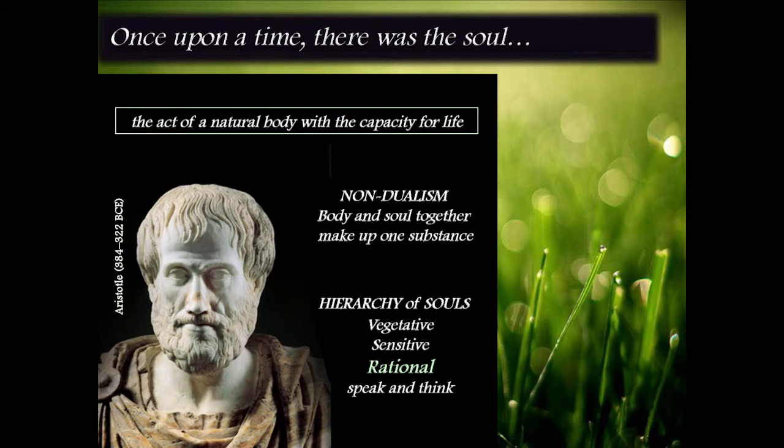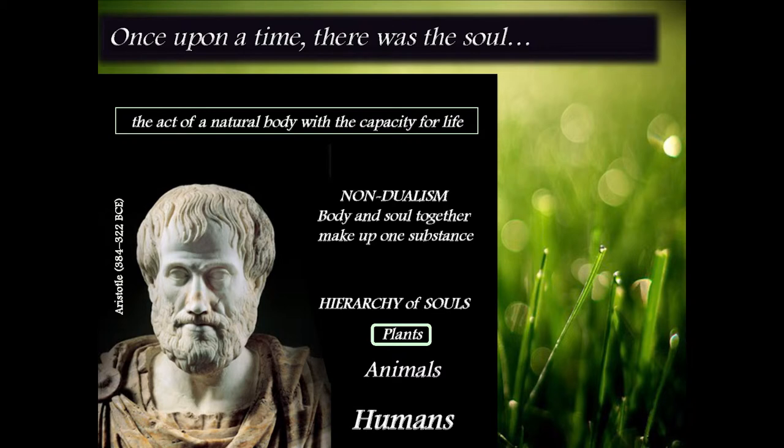It's not difficult to see how the three groups kind of overlap with three hierarchical groups that we can recognize very easily. The first one would have been the plants, then you had the animals, and then the humans. He didn't just say, okay, you've got plants on one side, animals on the other side, and humans over here.